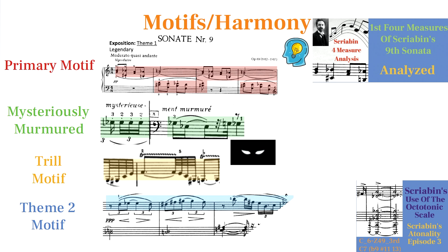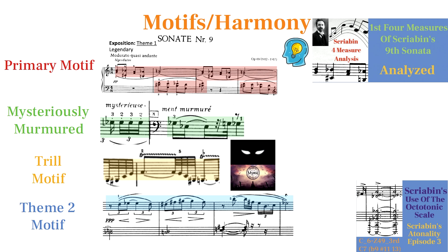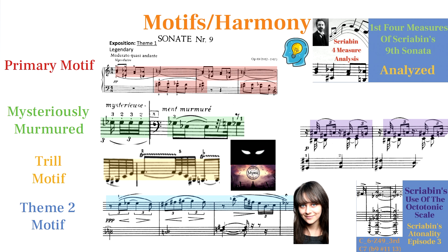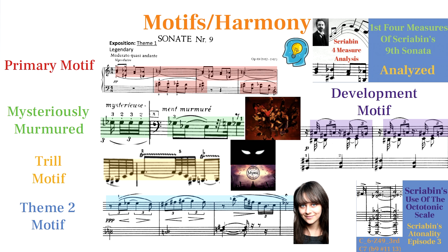Theme 2, in contrast, introduces more consonant mystic harmony with the marking, with a gentle buildup. Like Sonata 6, this motif represents a pure protagonist that is later corrupted by Theme 1 motifs. The only other motif to mention is the motif that comes out of the development section, which is essentially a developed form of the primary motif. It has the same chromatic outline of the primary motif but has a playful dance-like rhythm to it.